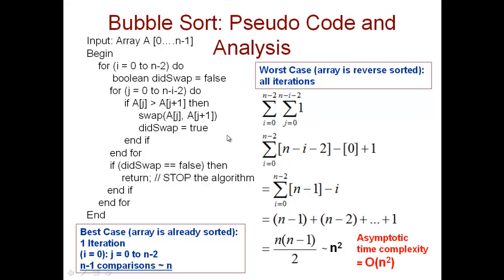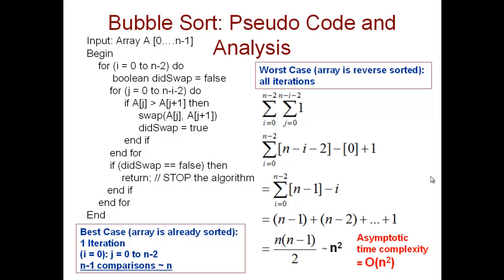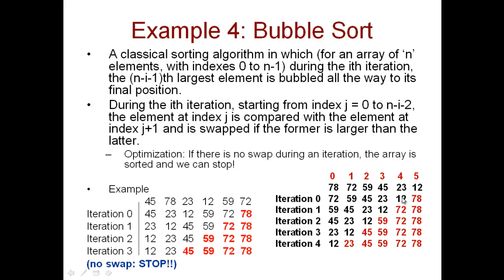The j loop runs over the unsorted portion. For iteration index 0, the j loop runs from 0 to n minus 0 minus 2, which is n minus 2. We do not go all the way to n minus 1; we just go up to n minus 2. That way, when j is n minus 2, we can compare it with j plus 1, which is n minus 1 — the last element. So we can still compare to its right.